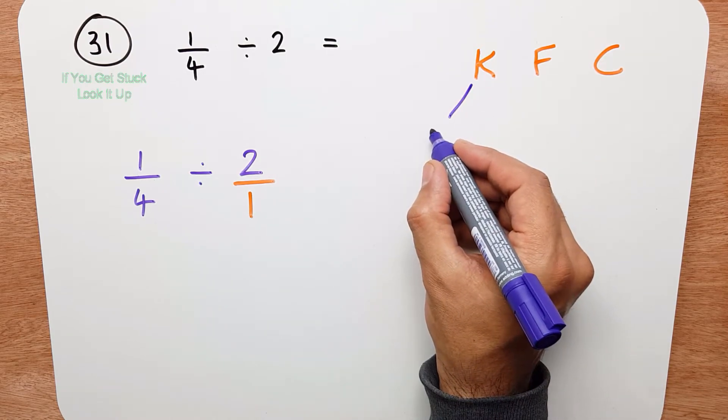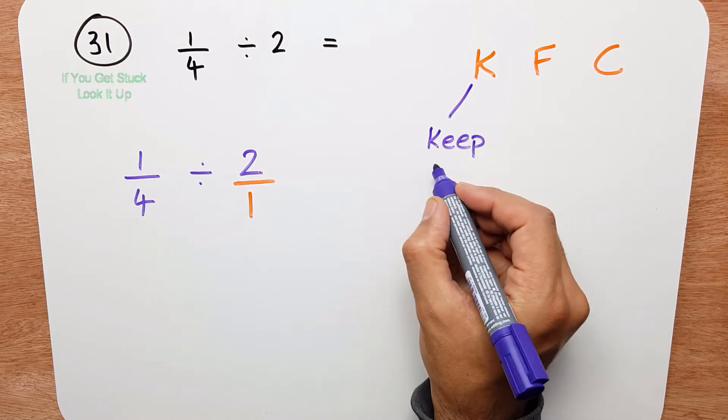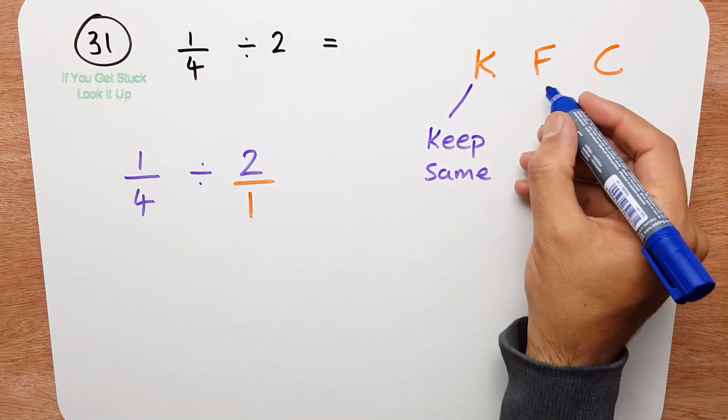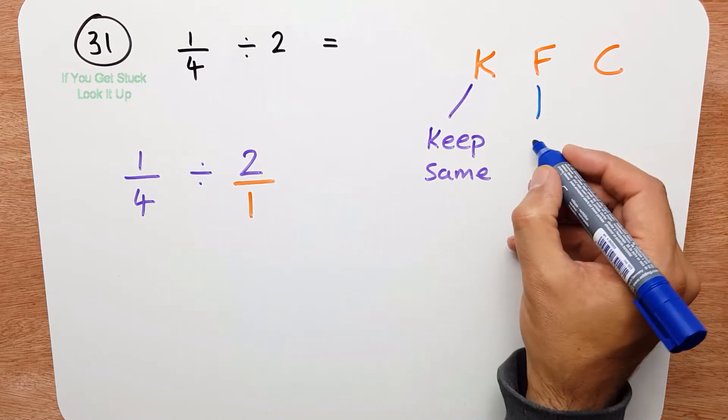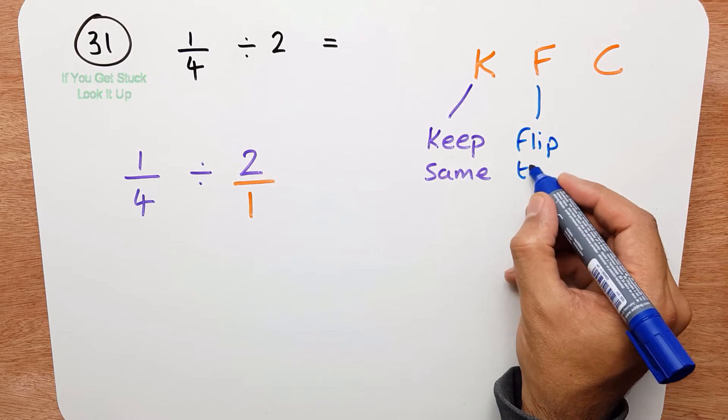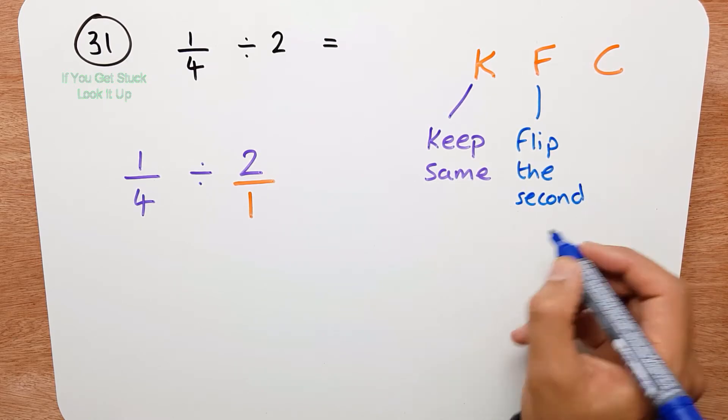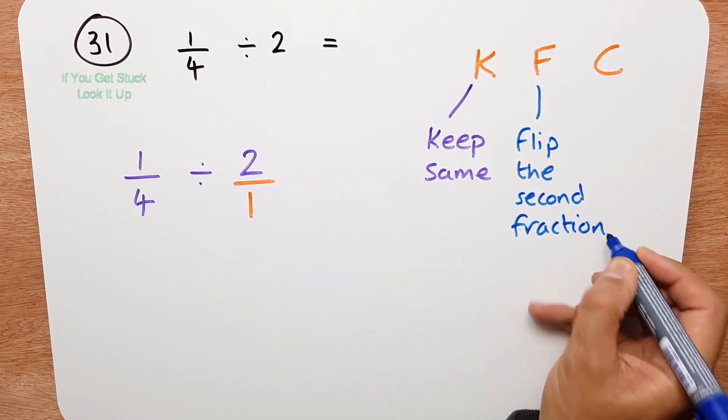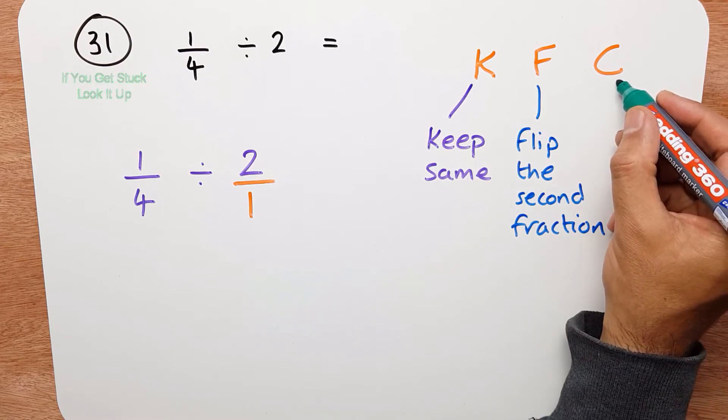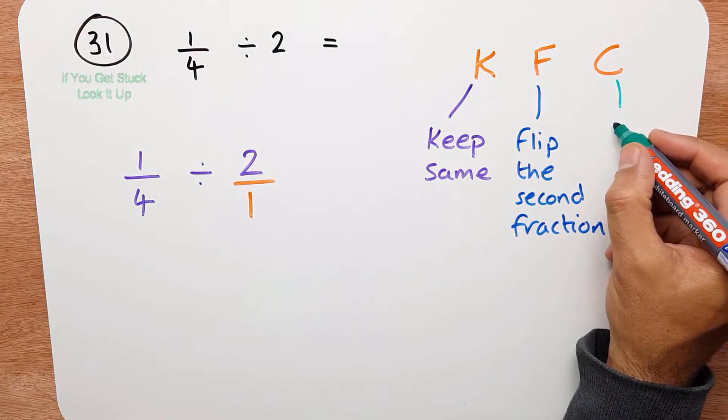Keep the first fraction the same. Flip the second fraction. And finally change the divide into a times.